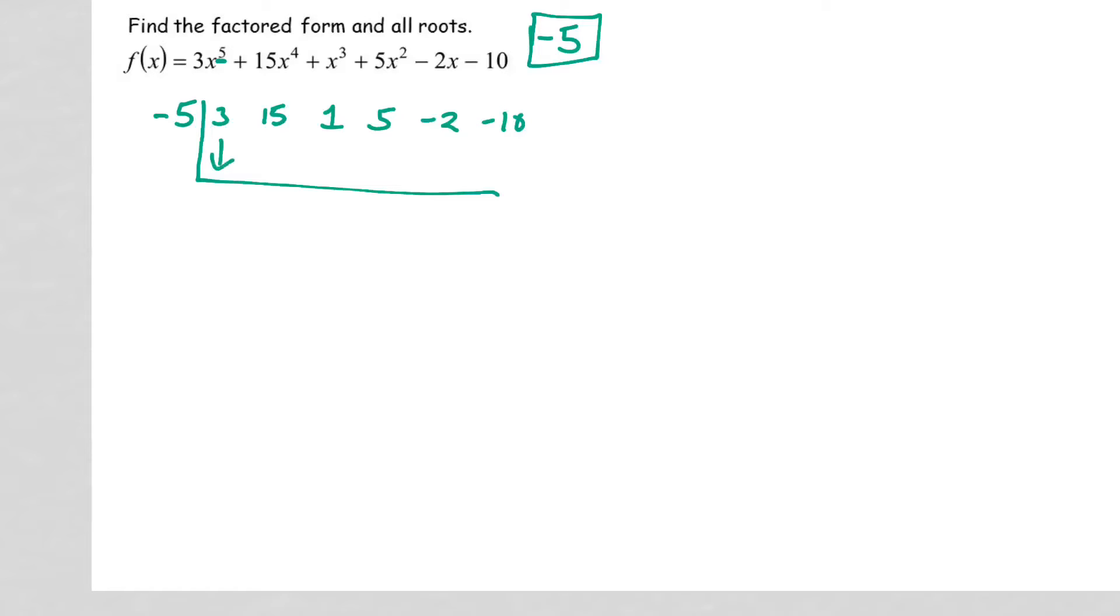So I'm going to bring this three down. Negative five times three is negative 15. 15 minus 15 is zero. Negative five times zero is zero. One, negative five. Five minus five is zero. Negative five times zero is zero. Negative two times negative five is positive 10, which gives me zero. That's no remainder because negative five is one of my roots.